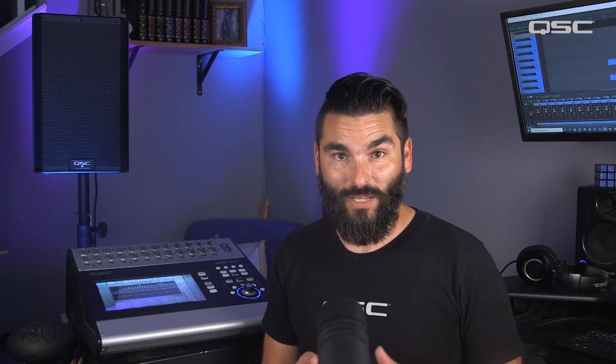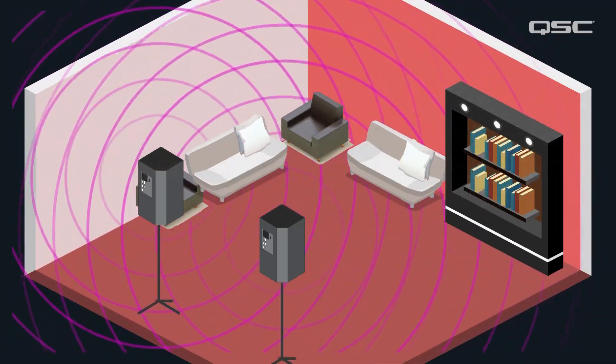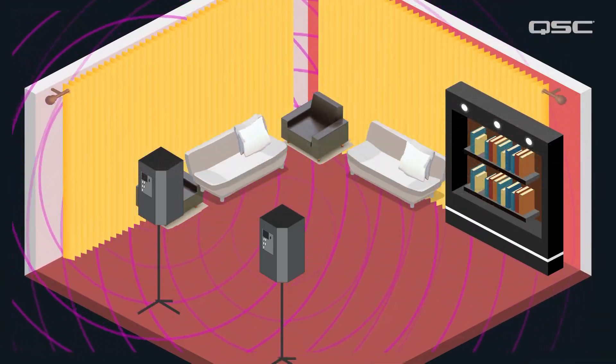Instead, try to set the PA system so that it faces walls with furniture like shelves, chairs, or sofas, drapes and curtains, things like that. The goal is to minimize or partially absorb the first reflections that are bouncing off the walls directly opposite the PA system. By placing your loudspeakers strategically in your venue, you can naturally achieve a better, more intelligible sound.